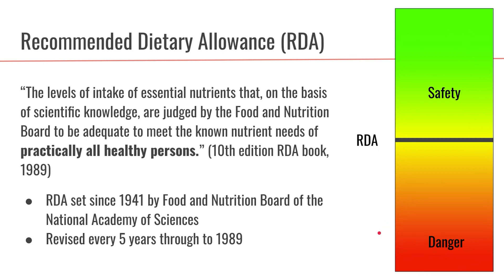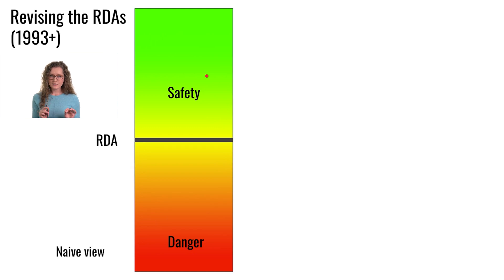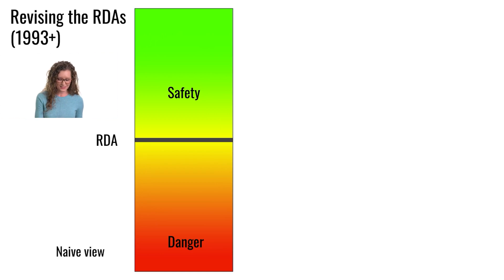The idea at that time can be represented by a gradient: there was danger if you didn't consume enough of a particular nutrient — you'd be at risk of deficiency. Then they set an RDA level, a threshold of nutrient intake where, as long as you get that intake, you'll be in the safety zone. Anything at that level or above puts you in the safety zone for that nutrient. This was our naive view pre-1990s, but things started to change when we realized the situation is a bit more complicated.